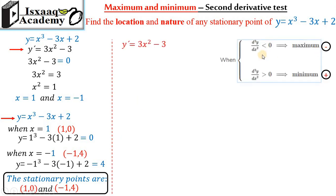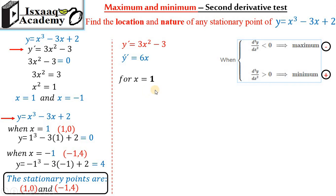The second derivative substituted gives a negative value from the first critical point, so that number is a minimum point. For the second derivative with x equal to 1, we substitute x equals negative 1. We use 6 times 1, which gives 6.